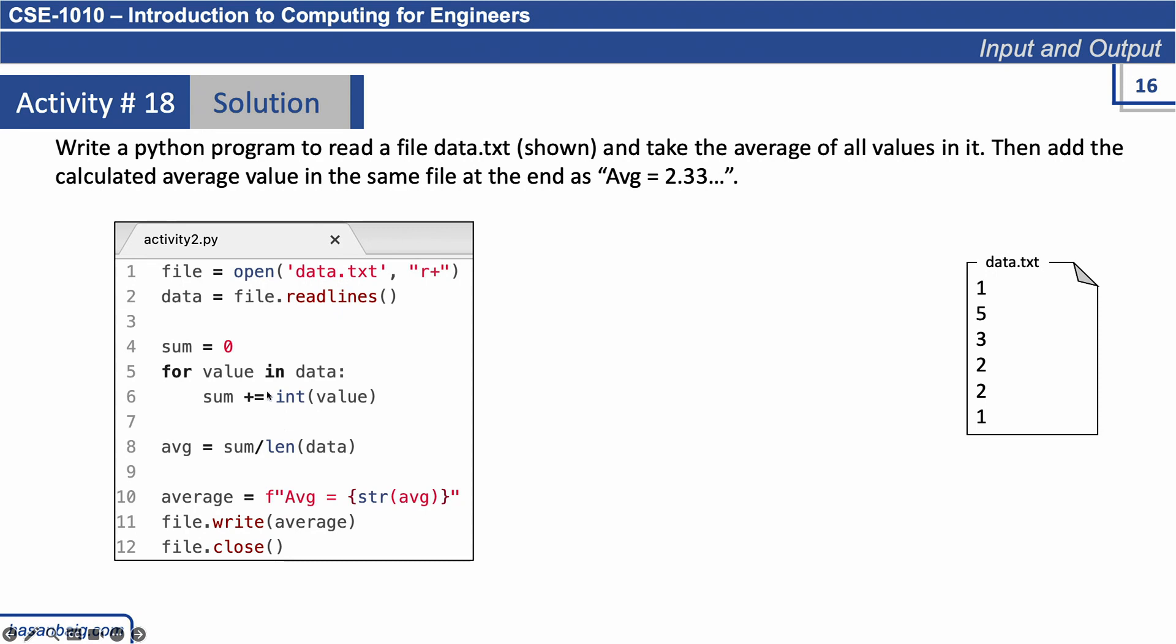Before assigning it to a variable name 'sum'. So sum plus equal means sum equals sum plus whatever the value is. So initially sum was zero. This is how we can iterate through all the elements in data, convert them into integer, and add them into sum. So sum of all the values are now evaluated.